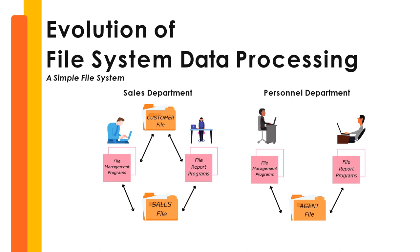Here we can see a simple file system. We have an example of the sales department and the personnel department. The sales department has customer files and sales files, whereas the personnel department has the agent files. For different departments, we have different files, and they have created different file management programs and file report programs that are only applicable to their specific departments.